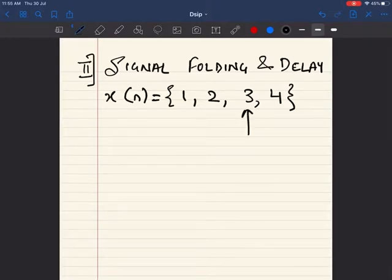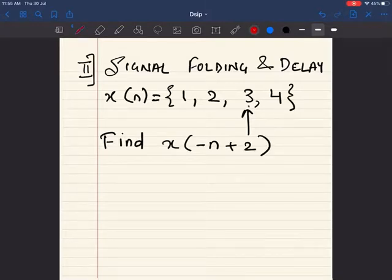My origin is at 3, and what do I have to find? I have to find x(-n+2). Since my origin is at 3, that means my 0 is at 3.